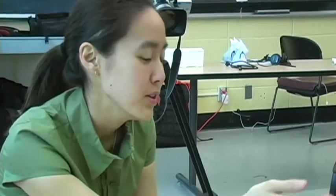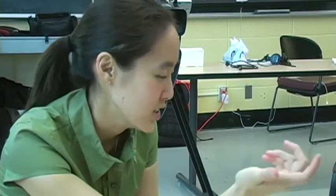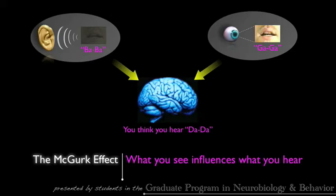It was really interesting — what I'm hearing is ba-ba and what he's saying is ga-ga, but when I integrate both the hearing and the visual cues, it sounds like a very strange da-da. It's like my brain doesn't really know what to do with that information — maybe it's on to the fact that something tricky is going on. The take-home point here is that what you see influences what you hear.